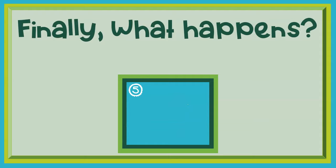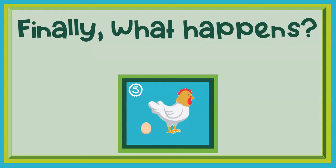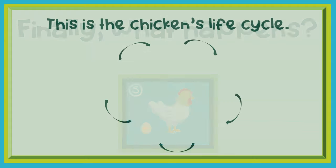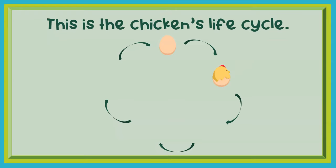Finally, what happens? The adult lays an egg so the cycle can repeat. This is the chicken's life cycle: egg, hatching, chick, getting bigger, adult chicken.